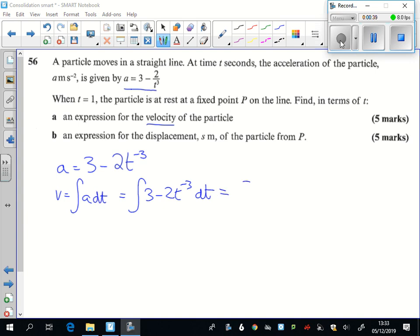Integrating that gives me 3t, and power goes up by 1, divided by the new power. So I've got t to the power of minus 2 plus t to the minus 2 there. And don't forget now to put a plus c.